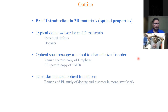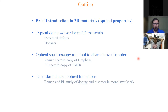I will discuss some of the typical defects or disorder-related processes in 2D materials, focusing on structural defects and dopants. Then I will discuss how optical spectroscopy can be used as a tool to characterize these defects, taking two examples: Raman spectroscopy of graphene and photoluminescence spectroscopy of transition metal dichalcogenides, specifically MoS2.